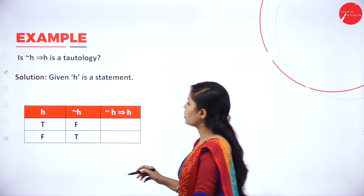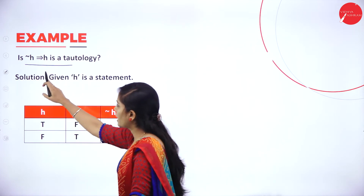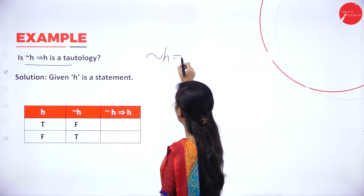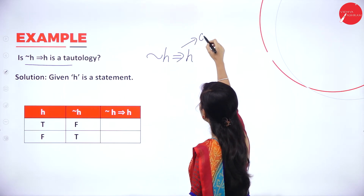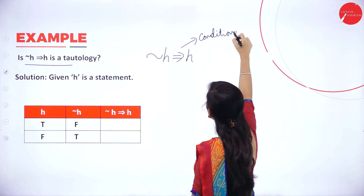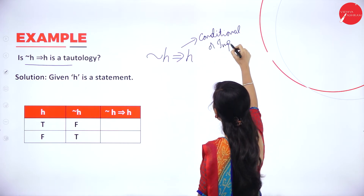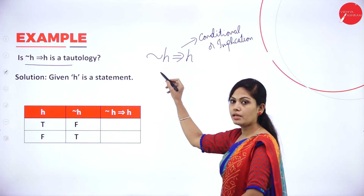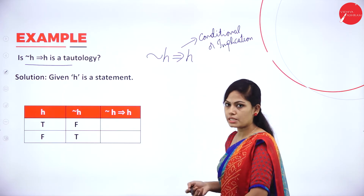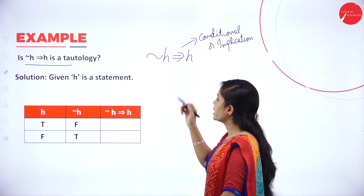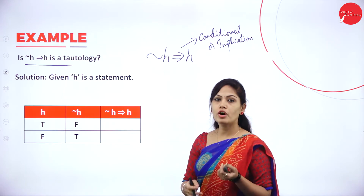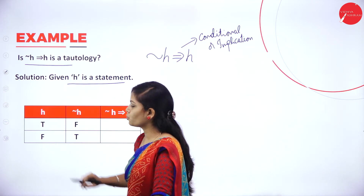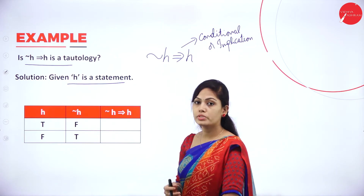Next example problem: Is ¬H → H a tautology? We have one statement H with two possibilities — true and false (2¹ = 2 rows). For every truth table, represent truth values in 2ⁿ values. One statement: 2¹ = 2 possibilities. Two statements: 2² = 4 possibilities (TT, TF, FT, FF). Three statements: 2³ = 8 possibilities.